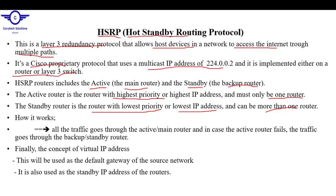What you have to understand here: the Active Router is the router with the highest priority. If the priority is not given, choose the router with the highest IP address. The Active Router, which is the main router, should only be one in the network. But the standby router can be more than one, and it is the router with the lowest priority. If priority is not given, choose the router with the lowest IP address.